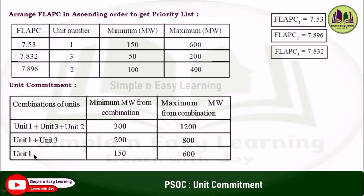The third combination leaves out unit 3 and considers only the first-priority unit 1 alone, giving a minimum of 150 MW and a maximum of 600 MW. This completes the combination of units in the unit commitment table.